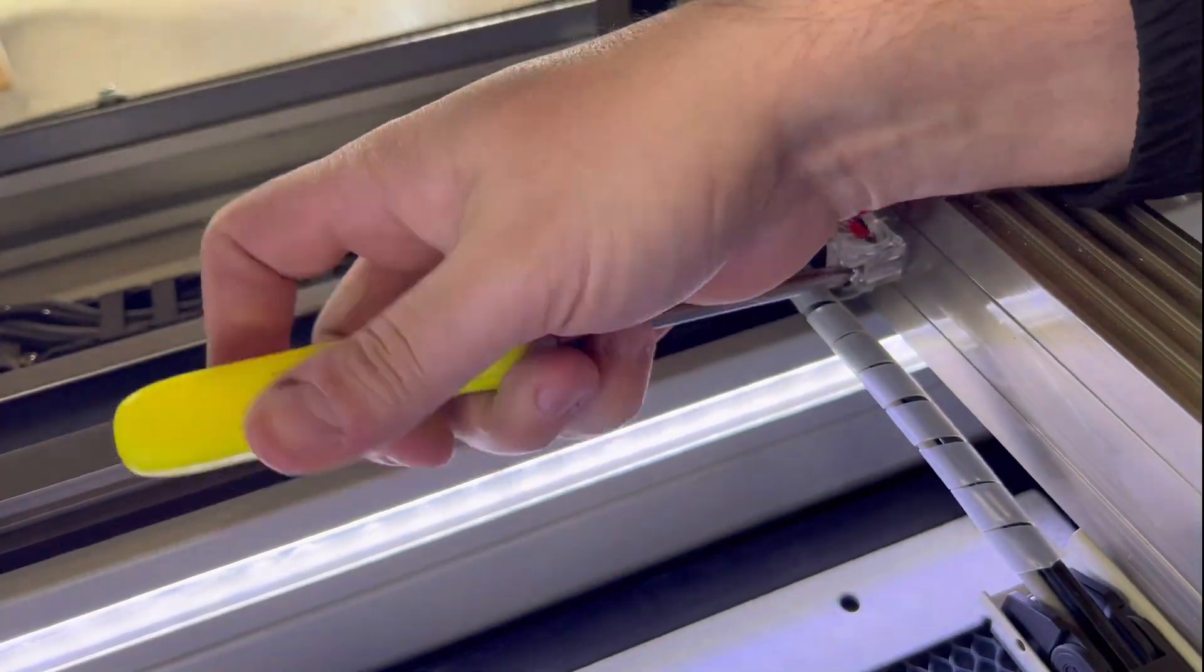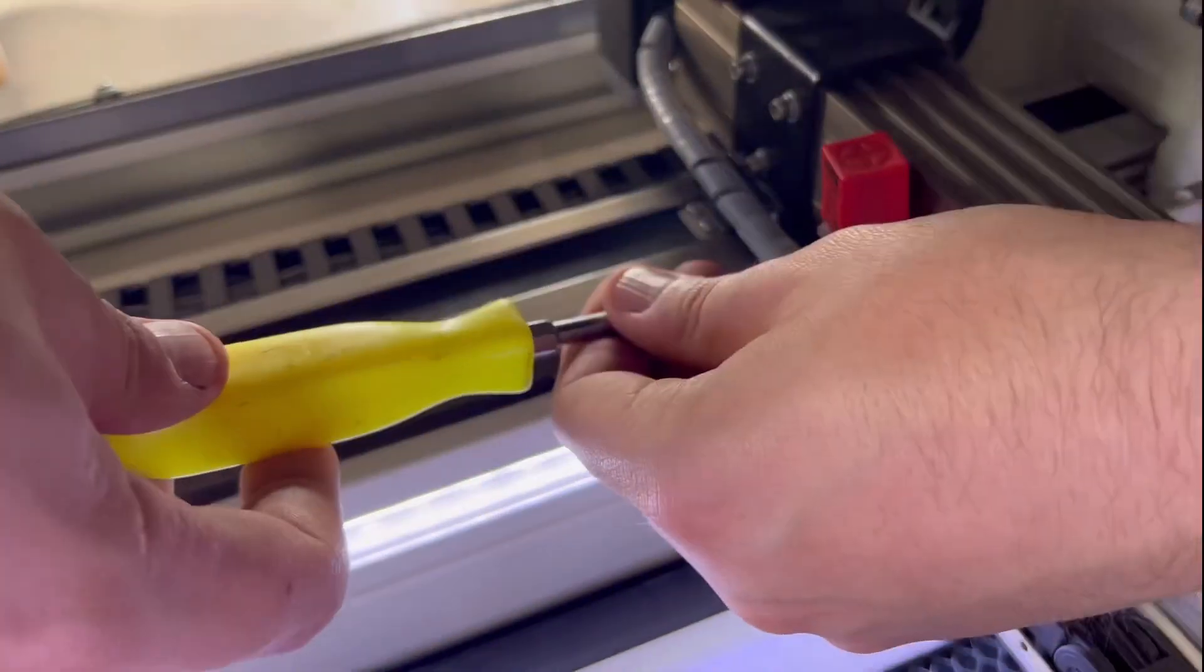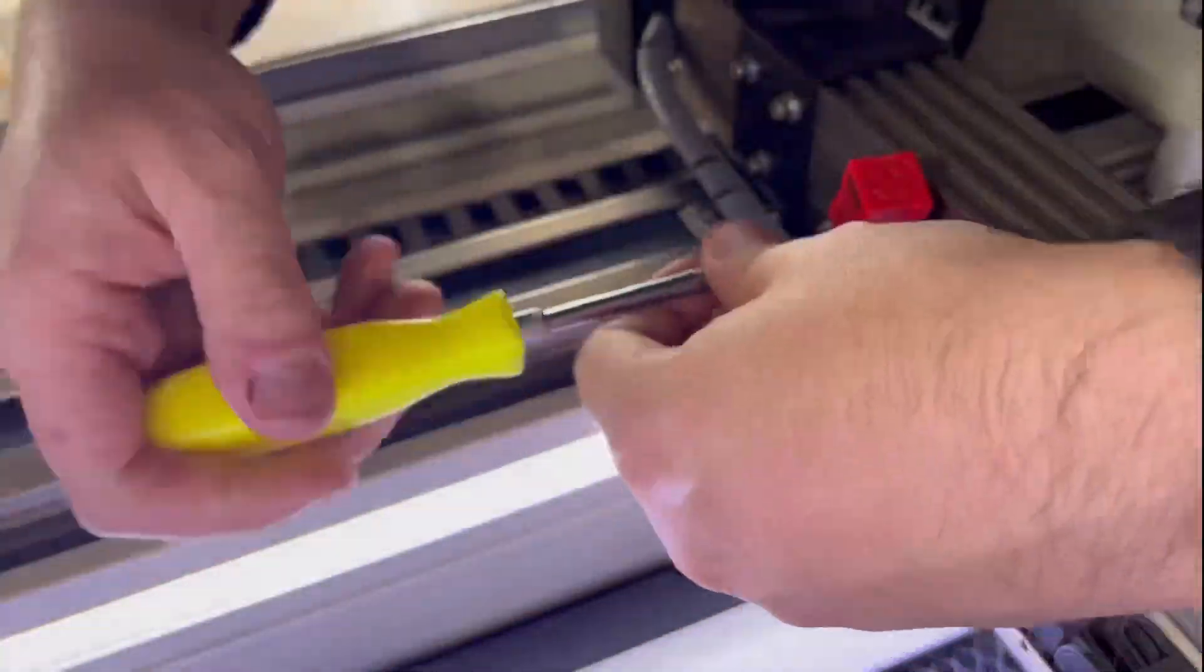That is the Amazon link for the part I bought. For instance, on my X gantry, my proximity sensor has broken.